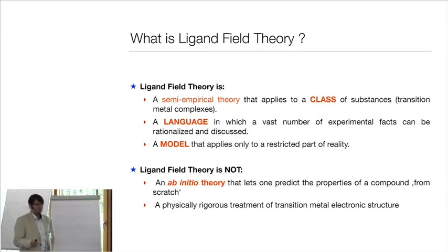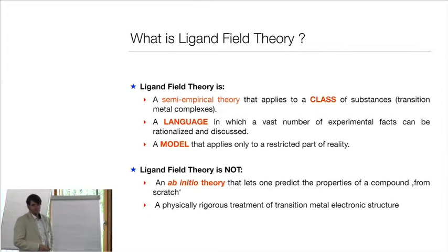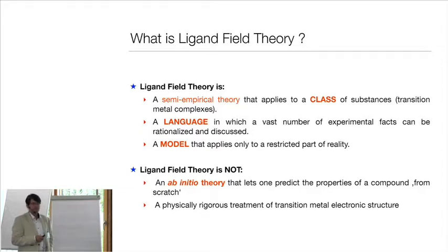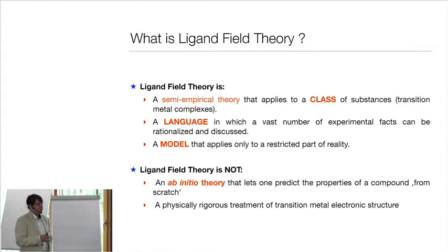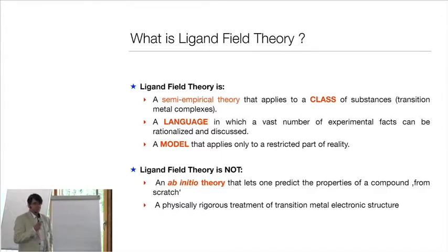Ligand field theory is not an ab initio theory that lets you predict the properties of a given compound from scratch. You cannot draw a compound and predict at which precise wave number you'll have an absorption band or at which exact magnetic field you'll observe a g-value. But ligand field theory lets you predict the number of peaks you expect in an absorption spectrum, the general shape of an EPR spectrum, using semi-empirical parameters fitted to experiment.